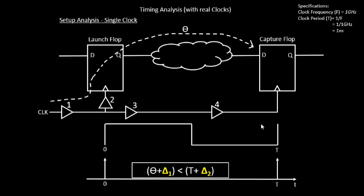Let's continue visualizing the clock network delays in the form of timing graphs. When we say delta1, delta1 is basically the amount of time required for the clock edge to reach the launch flop clock endpoint, and delta2 is the time required for the clock edge to reach the capture flop clock endpoint.